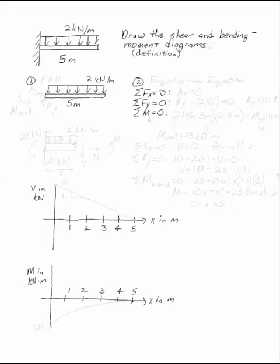Draw the shear and bending moment diagrams for the beam, cantilevered into the wall with a 2 kN per meter distributed load over the 5 meter length of the beam.